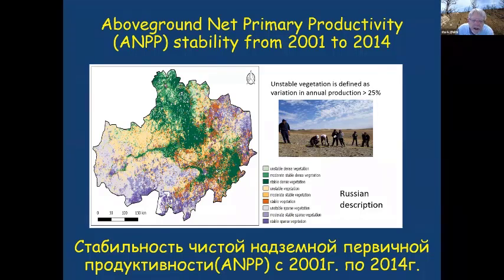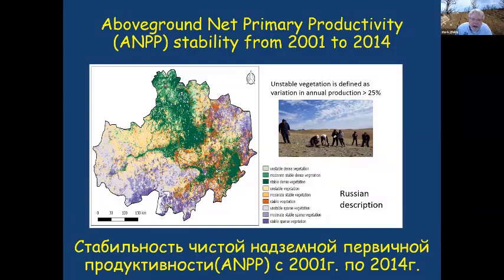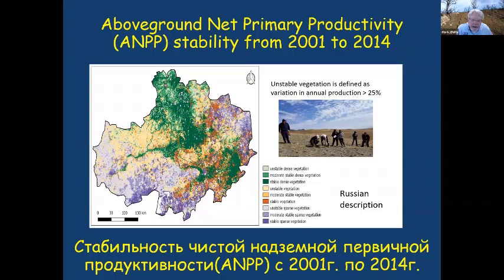The image on the left breaks vegetation into different classes. The term 'stability' references how consistent vegetation production is year to year over the period from 2001 to 2014. Unstable sparse vegetation is on the western side of the oblast where it tends to be drier with more precipitation variability. The densest, most stable, and highly productive vegetation is in the center of the country, illustrated by dark green.